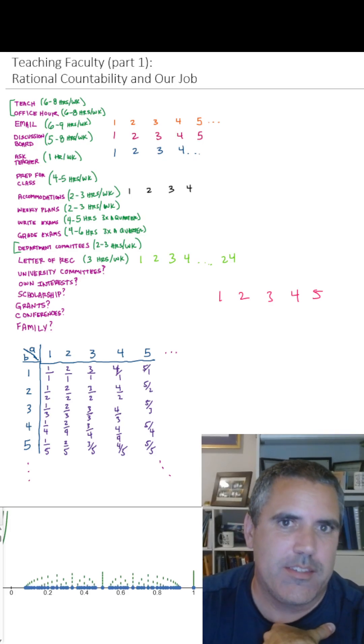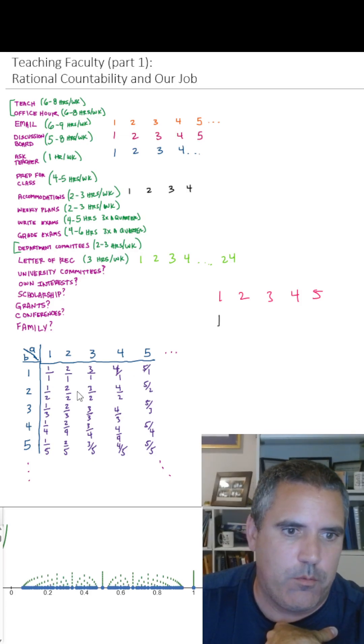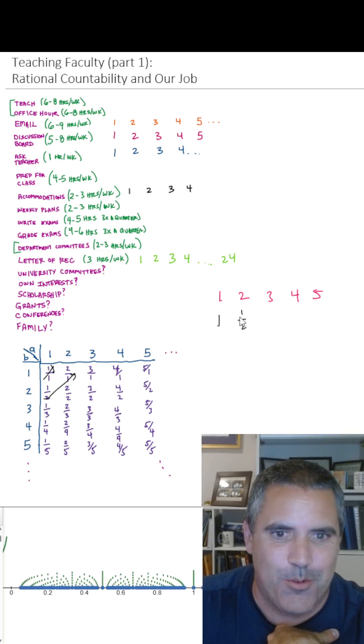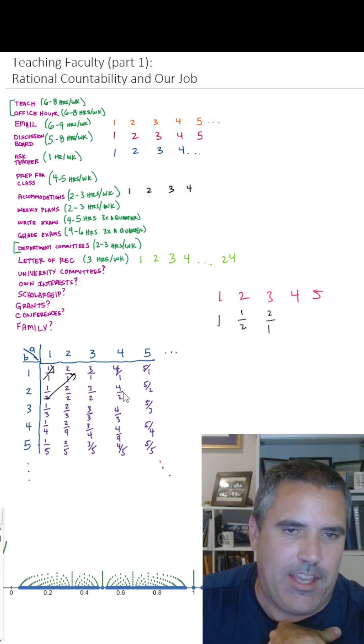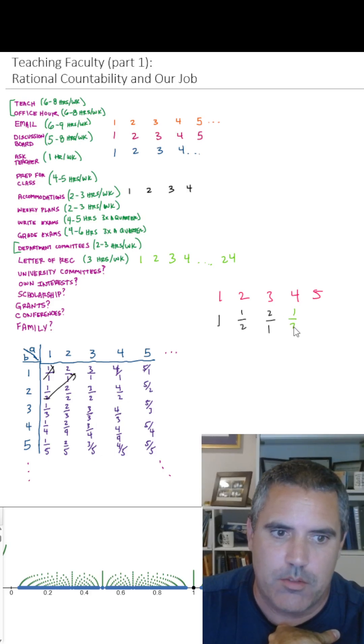So how in the world are we going to line these up? And the answer is you make a little table like this and you put them in the following order. You diagonalize, we say. So then you write 1 over 2 next and then you write 2 over 1. I'm not saying they're in numerical order. I'm just saying we are going to list every single one.